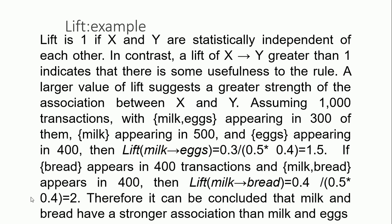If X and Y are statistically independent, lift equals 1. A lift greater than 1 indicates that there is some usefulness to the rule — a larger lift value suggests a greater strength of association. For example, with 1000 transactions, milk and egg appear together in 300, milk appears in 500, eggs in 400. The lift of milk and egg is 0.3 divided by (0.5 × 0.4) = 1.5. For milk and bread, the lift equals 2 — therefore milk and bread have a stronger association than milk and eggs.